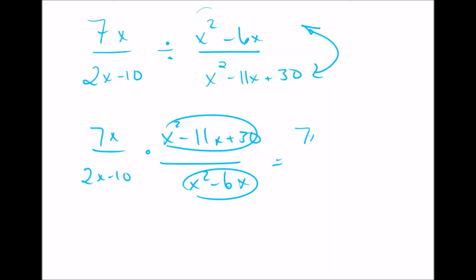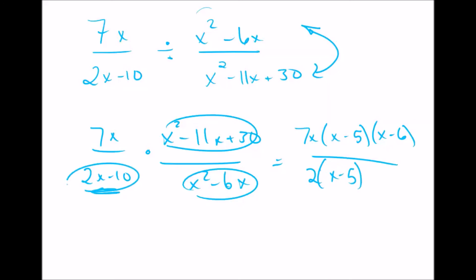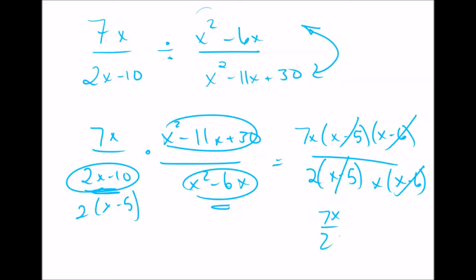After flipping and factoring, you have 7x times x minus 5 times x minus 6 on top, over 2 times x minus 5 times x times x minus 6 on the bottom. Cancel, cancel, cancel, cancel — and you're left with 7x over 2x, which simplifies to 7 over 2. The only difference for division is you flip it, then factor, and do exactly like multiplication after you flip that first part.